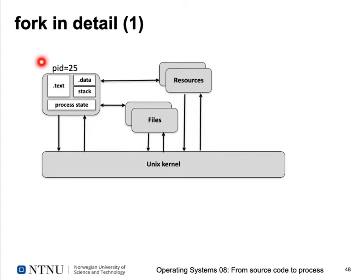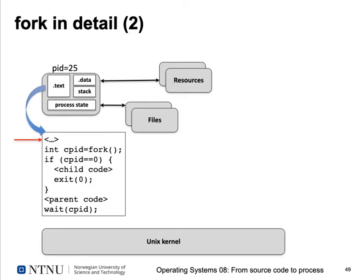Let's look at fork in detail. We have a process with process ID 25 with its address space: a text segment, data, stack, and other process state like the stack pointer and program counter. This process communicates with the Unix kernel using system calls, potentially via a library like libc, and has its own set of allocated resources and open files. The kernel executes a fork system call and returns the process ID to the parent.